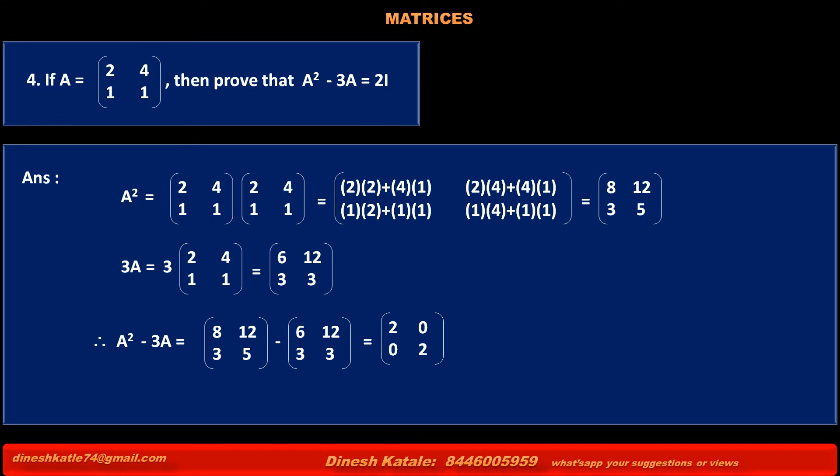This equals subtracting corresponding elements: 8 - 6 = 2, 12 - 12 = 0, 3 - 3 = 0, 5 - 3 = 2. That is [2, 0; 0, 2]. This equals, by taking 2 common, 2 times the matrix [1, 0; 0, 1], which is equal to 2I.